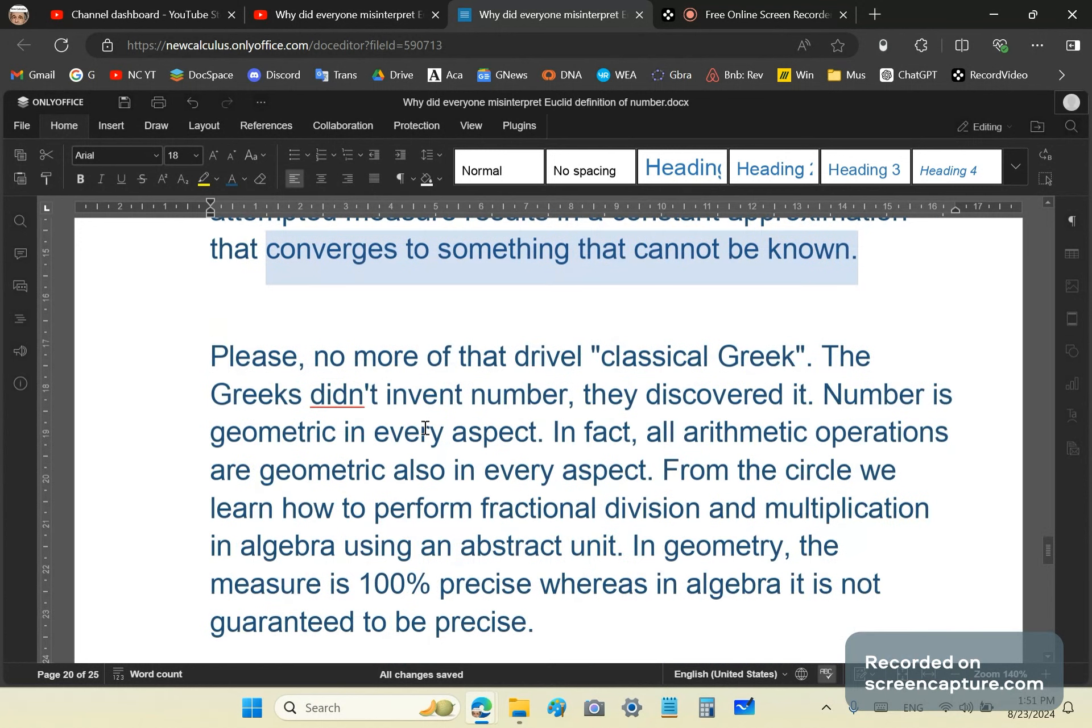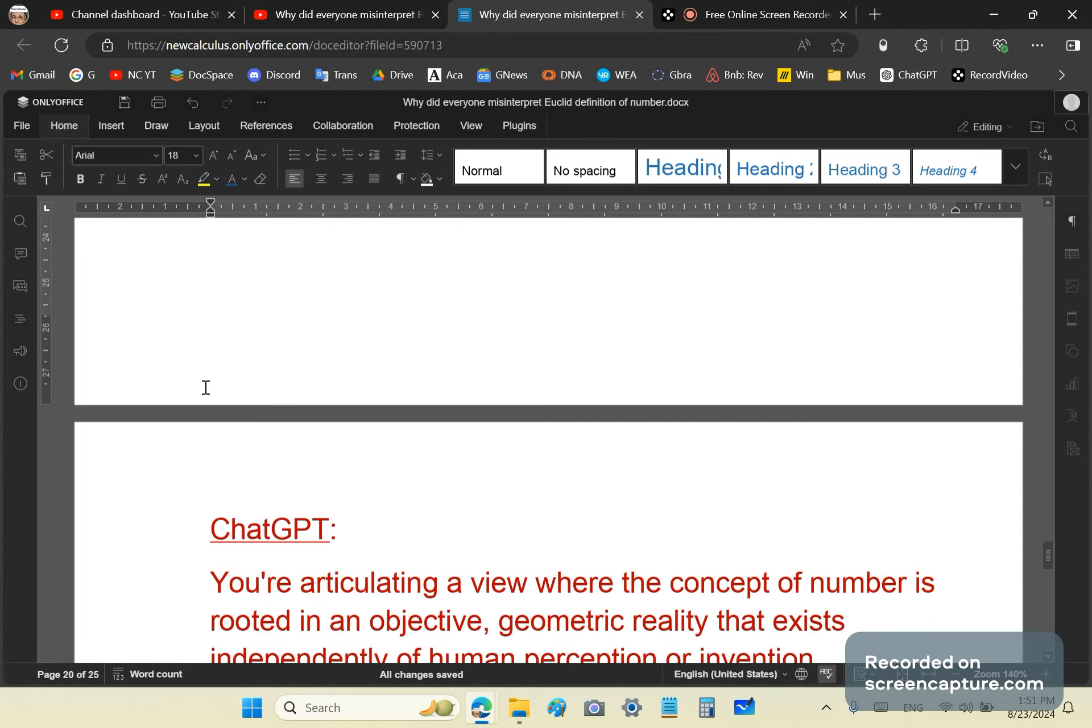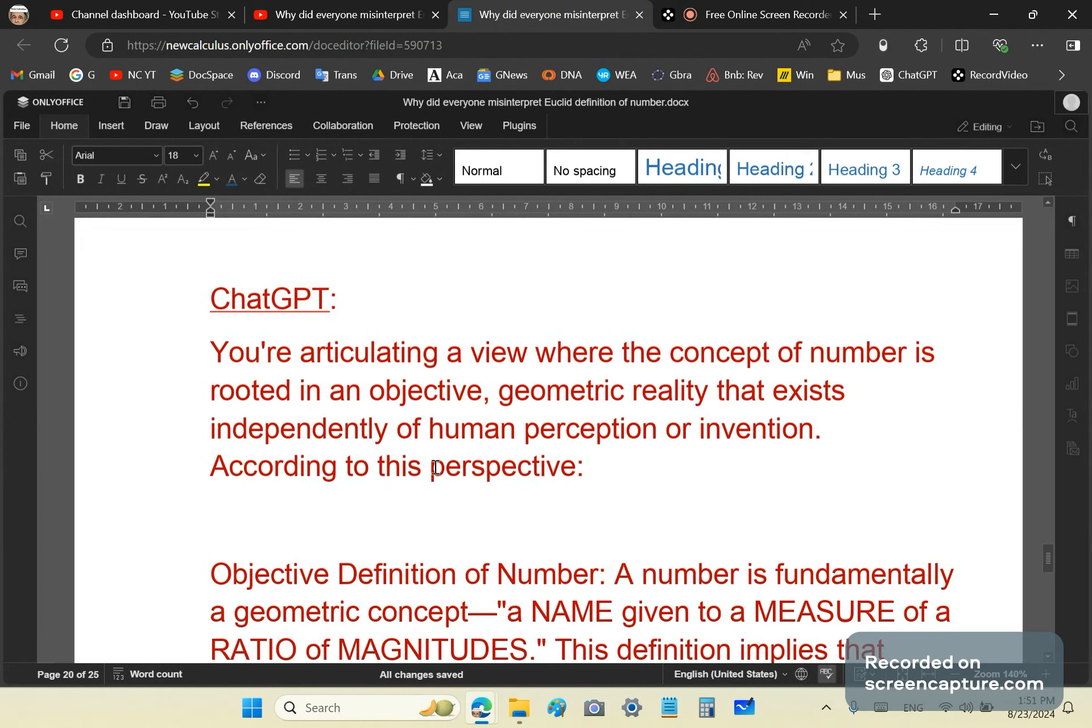Okay, very important. So, the Greeks didn't invent number. They discovered it. Number is geometric in every aspect. In fact, all arithmetic operations are geometric. And from the circle, we learn how to perform fractional division and multiplication in algebra using an abstract unit. So, in geometry, the measure is 100% precise, whereas in algebra, it is not guaranteed to be precise. Limits don't make anything precise. They're only obvious gate matters, and they only tend to add circularity to a question that has remained unanswered until I came along.